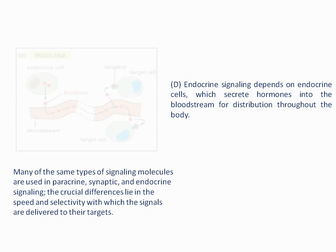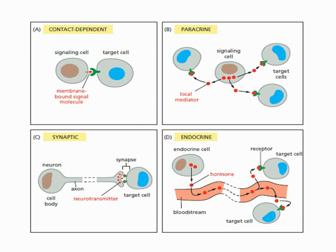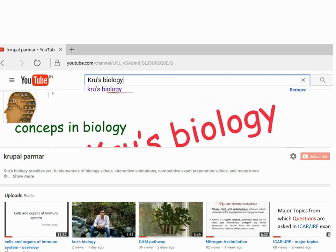The fourth type is endocrine signaling, which depends upon endocrine cells that secrete hormones into the bloodstream, allowing them to reach target cells. It is called endocrine signaling because it depends upon the endocrine cells.